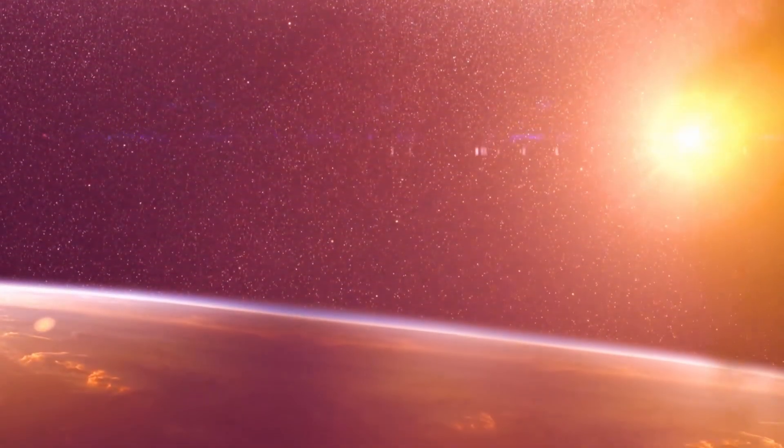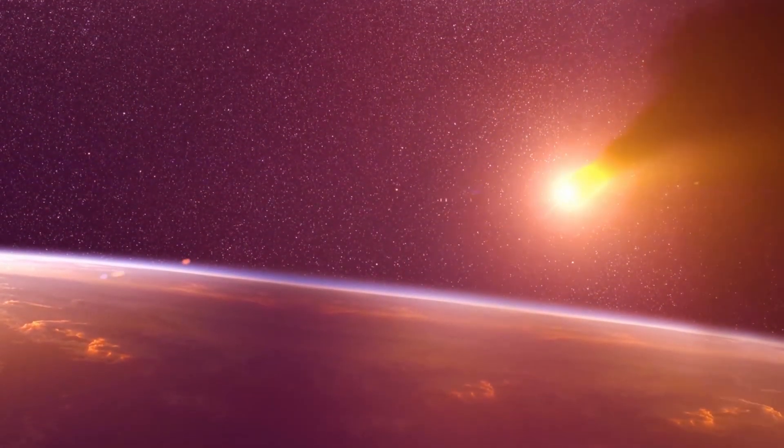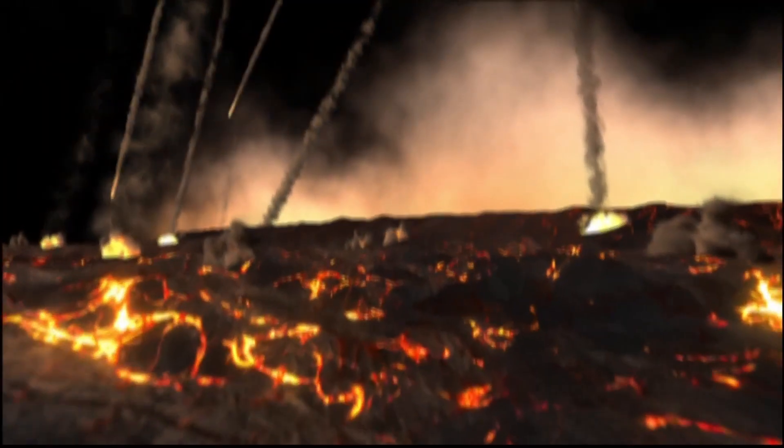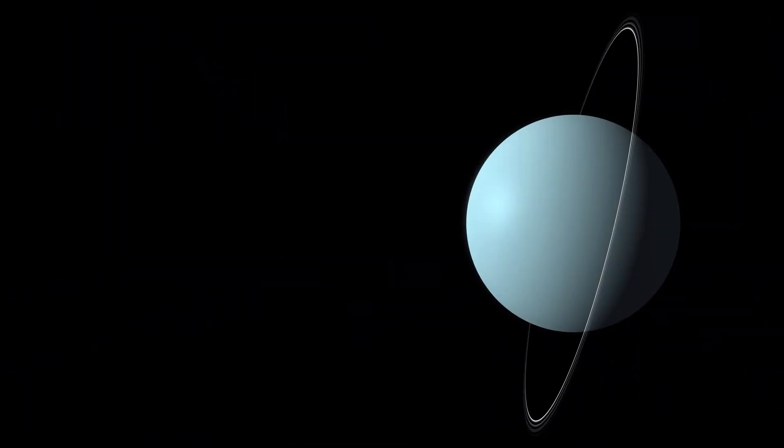Alternatively, a new take on the original asteroid collision theory speculates that Venus and a similarly sized celestial object collided, resulting in Venus growing in size rather than being destroyed. Moving on to Uranus, a planet with uniquely positioned rings and moons that follow the same 97 degree tilt.